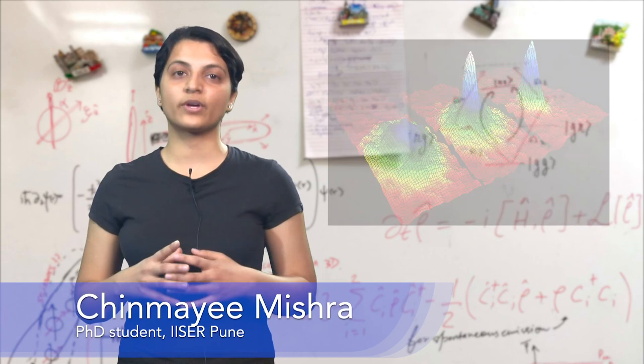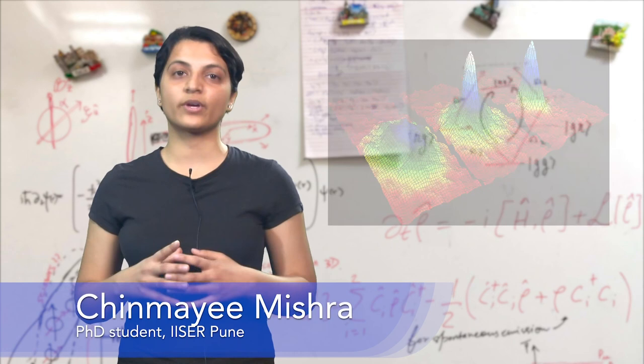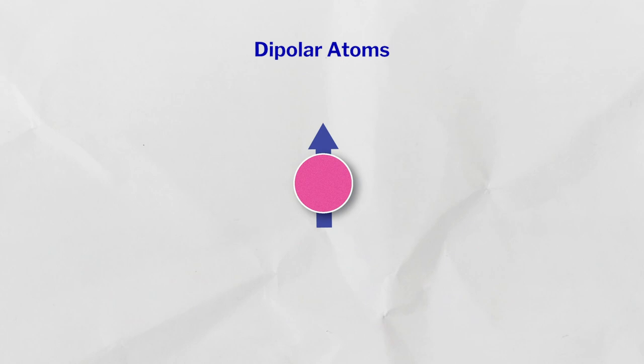In 1995 at JILA, experimentalists were able to create Bose-Einstein condensate, the fifth state of matter which was predicted by Einstein using Bose statistics in the 1920s.